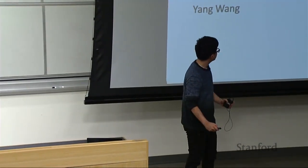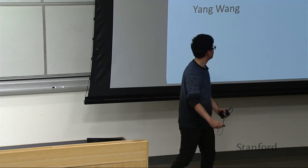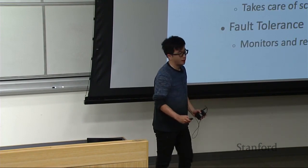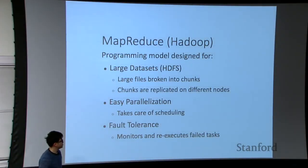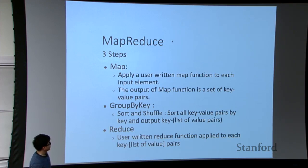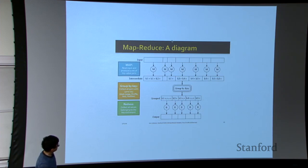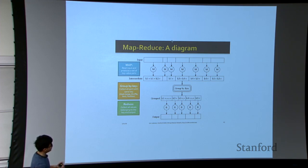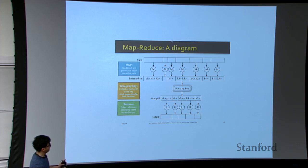We're going to review MapReduce and frequent item set mining. MapReduce is a programming model designed for large datasets with easy parallelization and fault tolerance. There are three steps in MapReduce. First, the map function takes each input and assigns a value for each key. In the group-by-key phase, MapReduce collects the pairs, does a sort and shuffle, and assigns each datum to different reducers. In the final phase, the reduce step takes all the data and deals with values with the same keys, then outputs and concatenates them together.